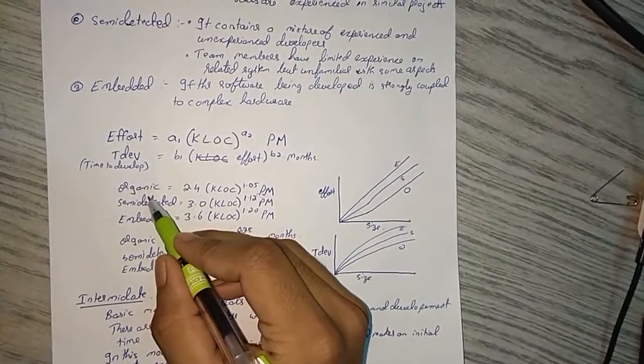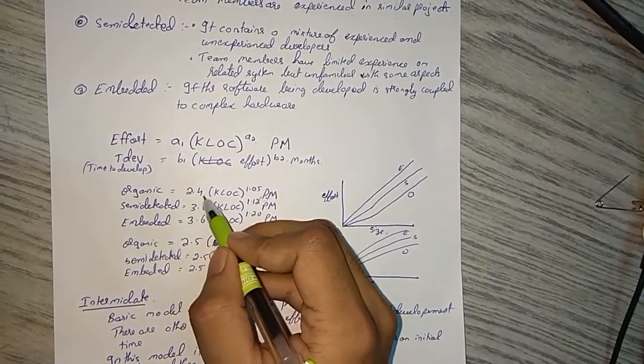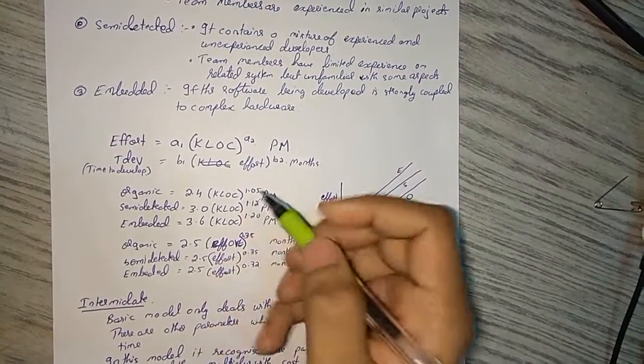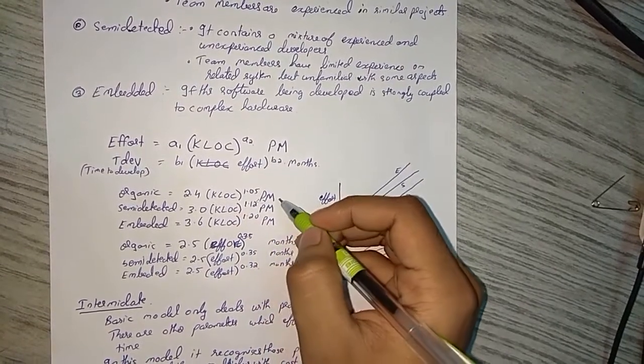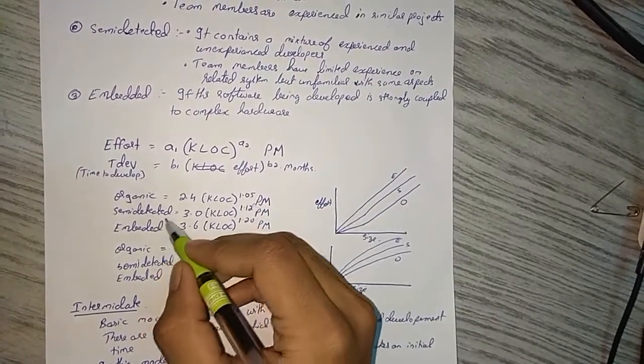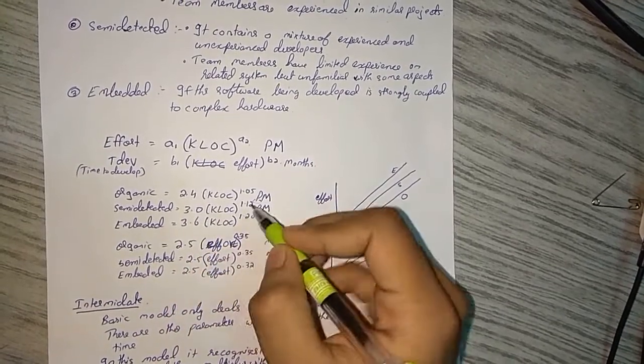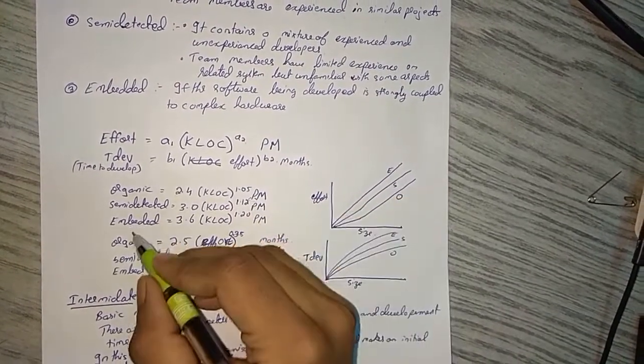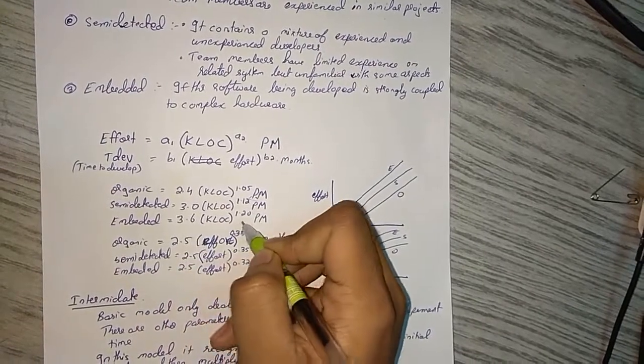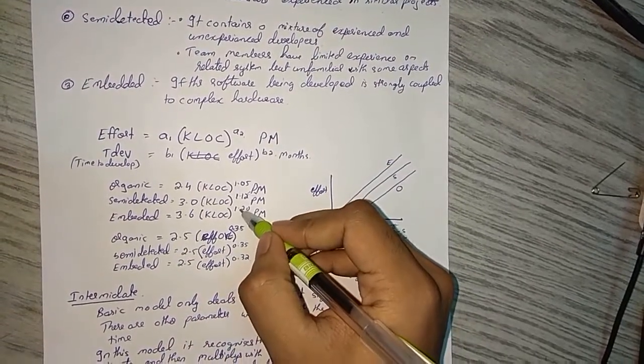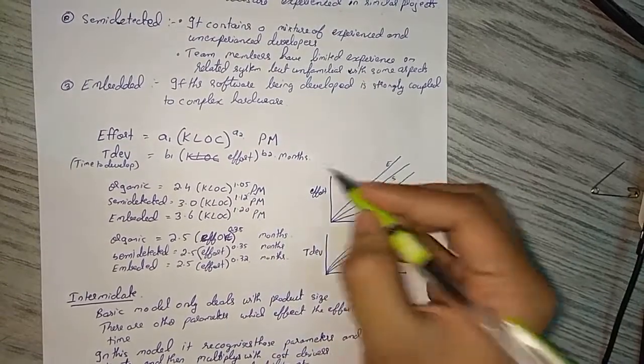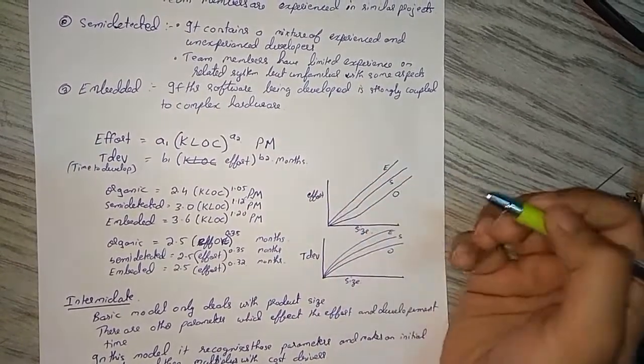So first we have organic: organic is 2.4 times KLOC raised to 1.05 PM. Semi-detached is 3.0 times KLOC raised to 1.12 PM. Embedded is 3.6 times KLOC raised to 1.02 PM. PM is what? Person per month.